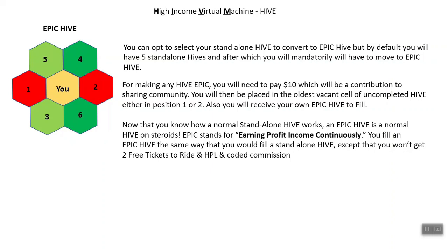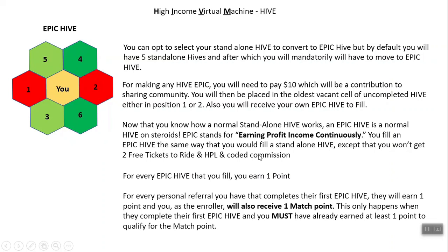You will be placed in the oldest vacant cell of an uncompleted hive, either in position 1 or 2, which helps everyone complete their incomplete hives — we are not leaving anyone behind. You will also receive your own blank hive to fill. Now that you know how a normal standalone hive works, visualize an Epic Hive as a normal hive but on steroids. EPIC stands for Earning Profit Income Continuously. You fill an Epic Hive the same way you would fill a standalone hive, except you won't get two free tickets to ride, neither the HPL opportunity, nor the coded commission.